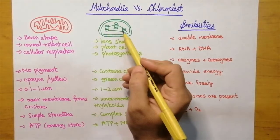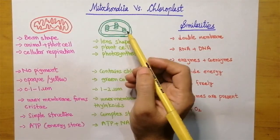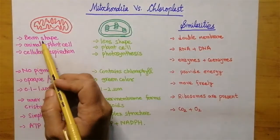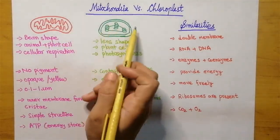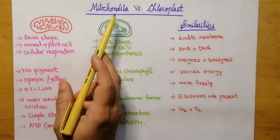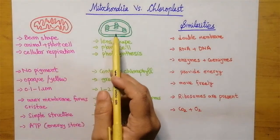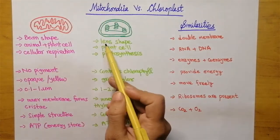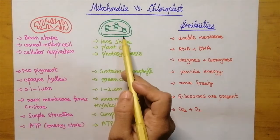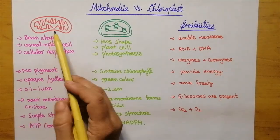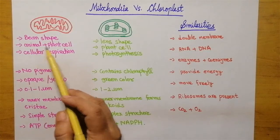Here we have the diagram of mitochondria and here this is chloroplast. The first difference between both these organelles is their shape. The mitochondria is bean-shaped while the chloroplast is lens-shaped, as you can see from these diagrams.